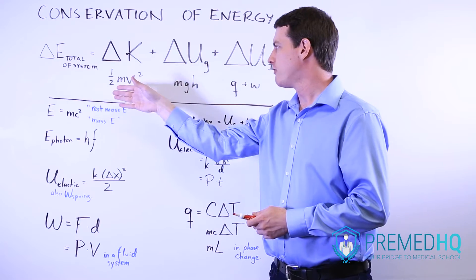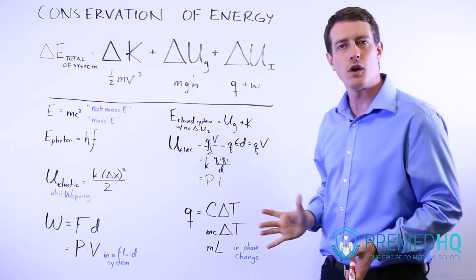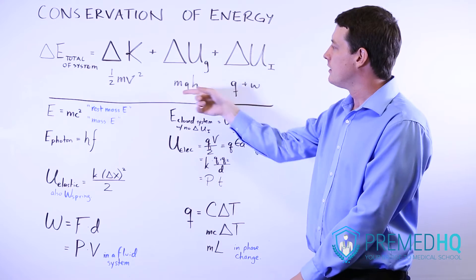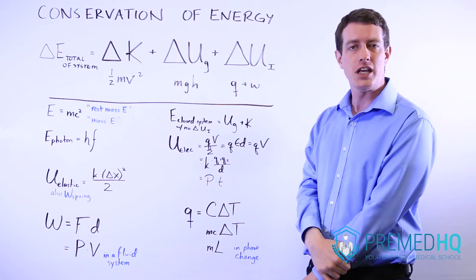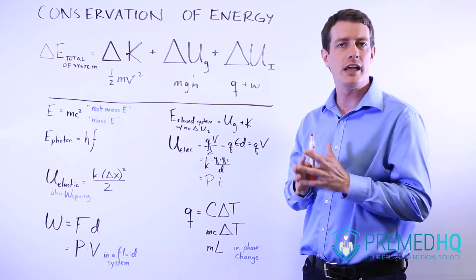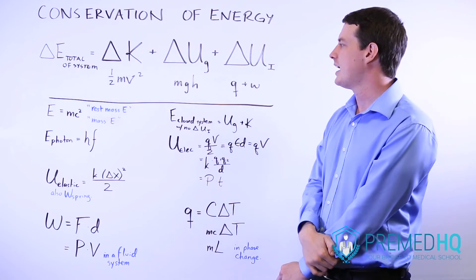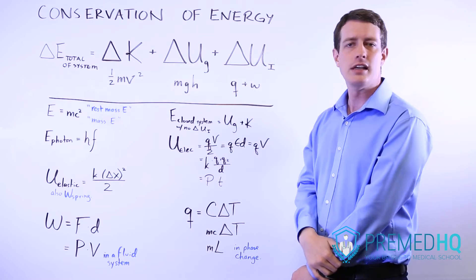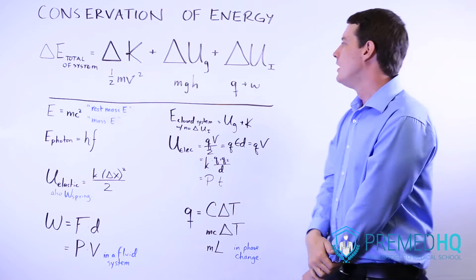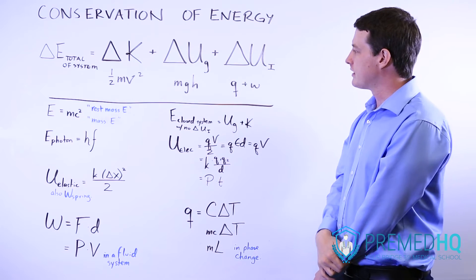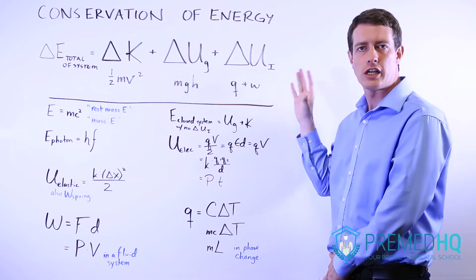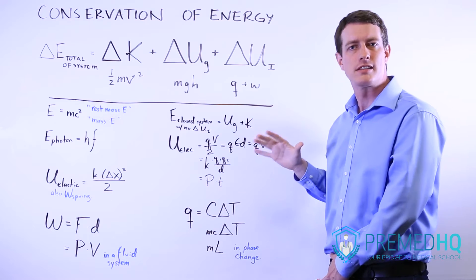For kinetic energy, the formula is one half mv squared, and that's one that you should have ingrained in your mind by the time you take the MCAT. Gravitational potential energy is equal to mgh, where g is the gravitational constant — you can either say 9.8 or 10, but a lot of people choose to simplify it to 10 — and h is the height of the object above where it started or above ground level. Internal energy is often viewed as the change in heat produced or the change in work being performed on or by the system.